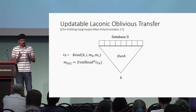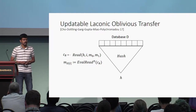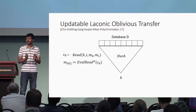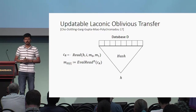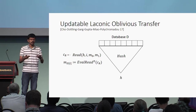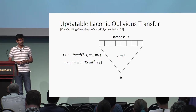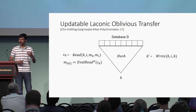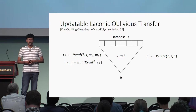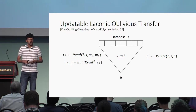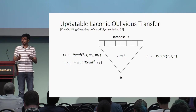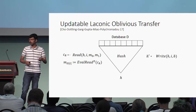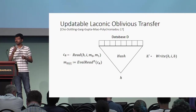The laconic aspect refers to efficiency: the running time of the read algorithm and the evaluation-read algorithm grows only polylogarithmically in the size of the database and is otherwise independent of the database size. The size of the read ciphertext is also polylogarithmic in the database size. The final algorithm is a write algorithm, which takes in a hash value H, an index I, and a bit B to be written to index I, and outputs an updated hash value — the hash of a new database D-prime which is the same as D except that location I is overwritten with bit B.